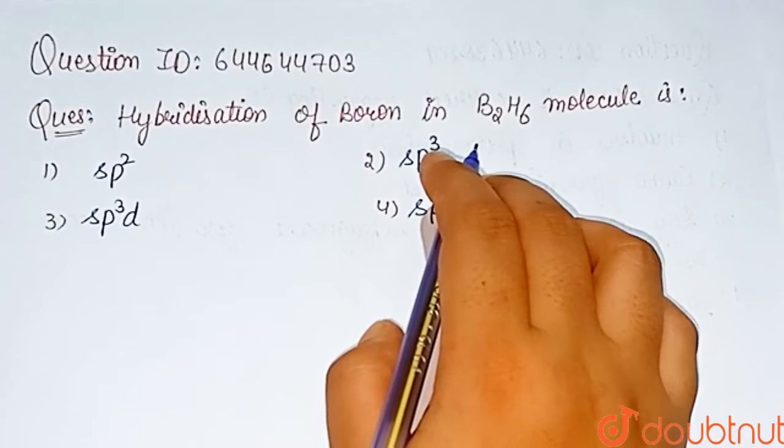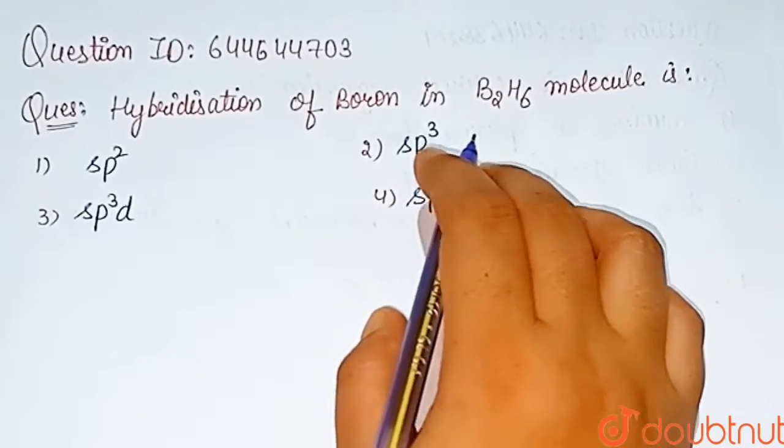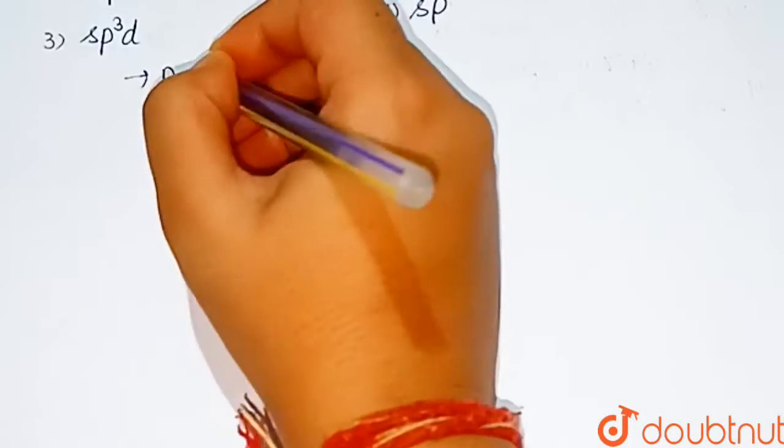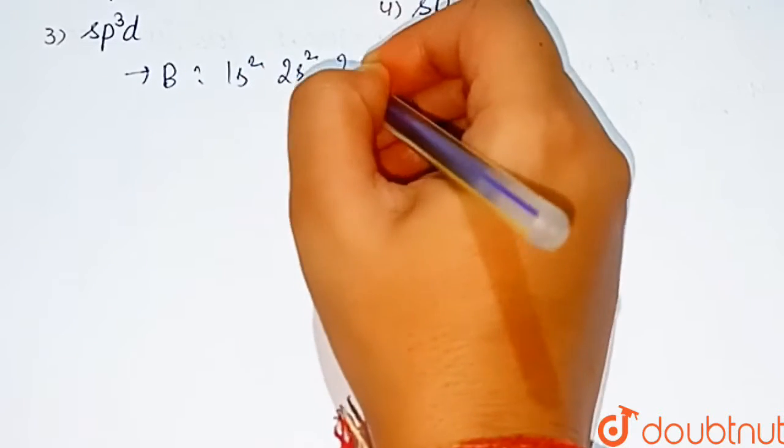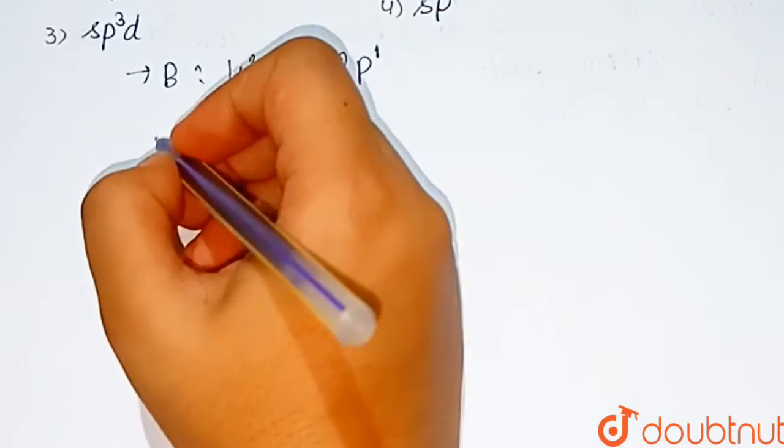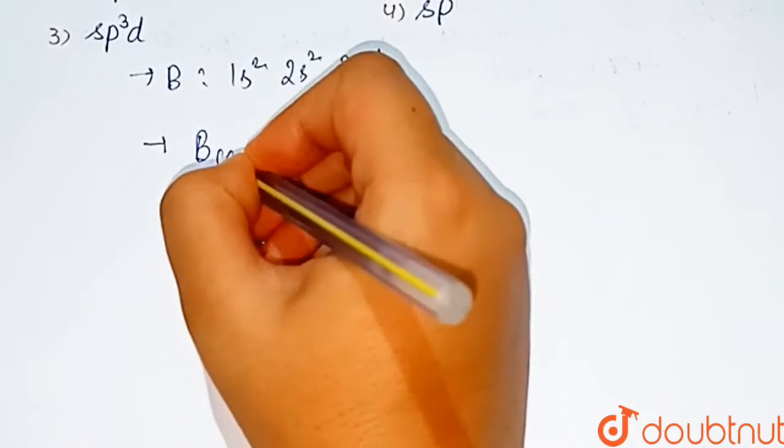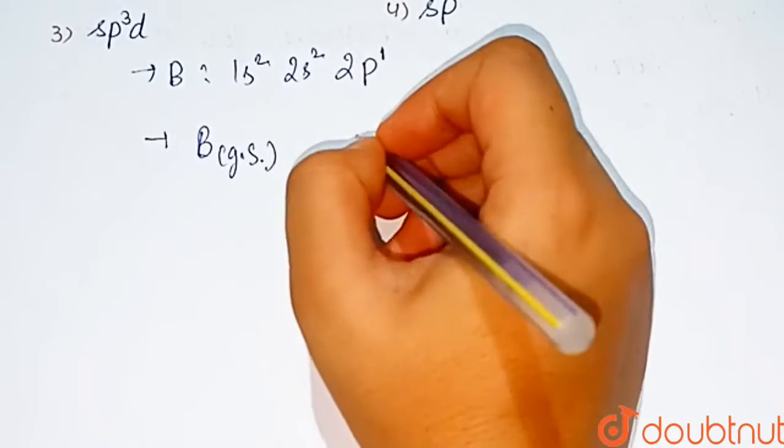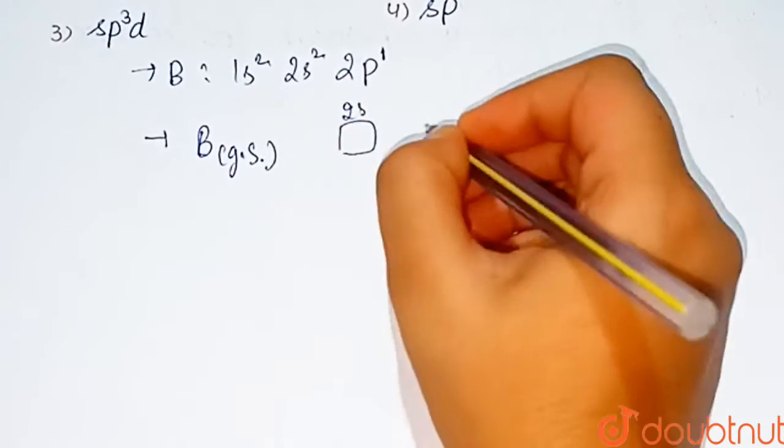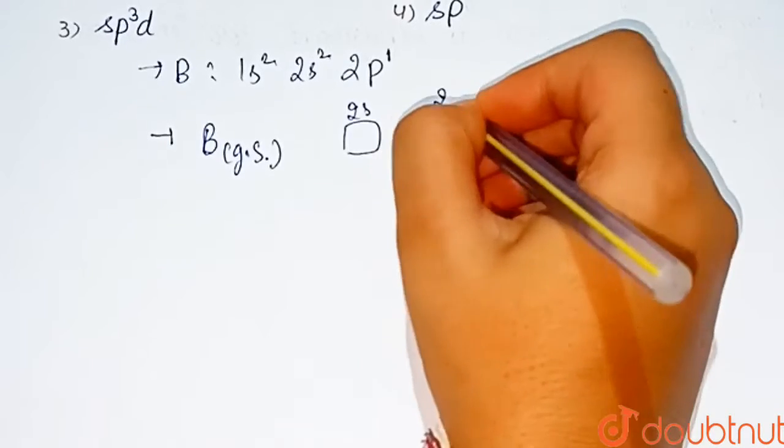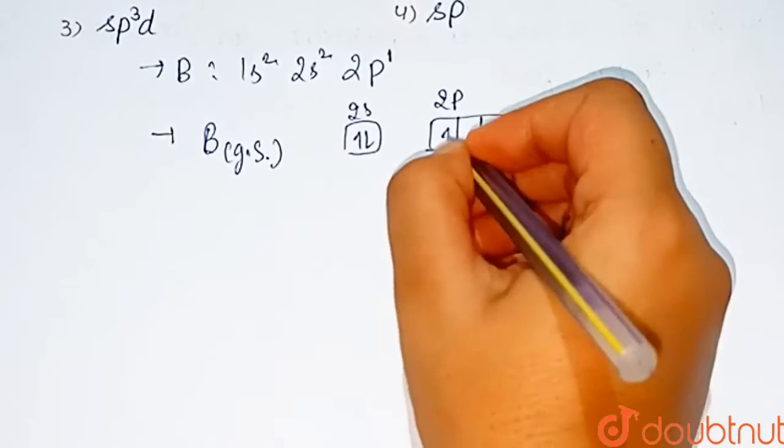First, we need to know the electronic configuration of boron, which is 1s² 2s² 2p¹. Now let's see the boron electronic configuration at ground state in orbitals: 2s and 2p. In 2s there are 2 electrons, in 2p there is 1 electron.